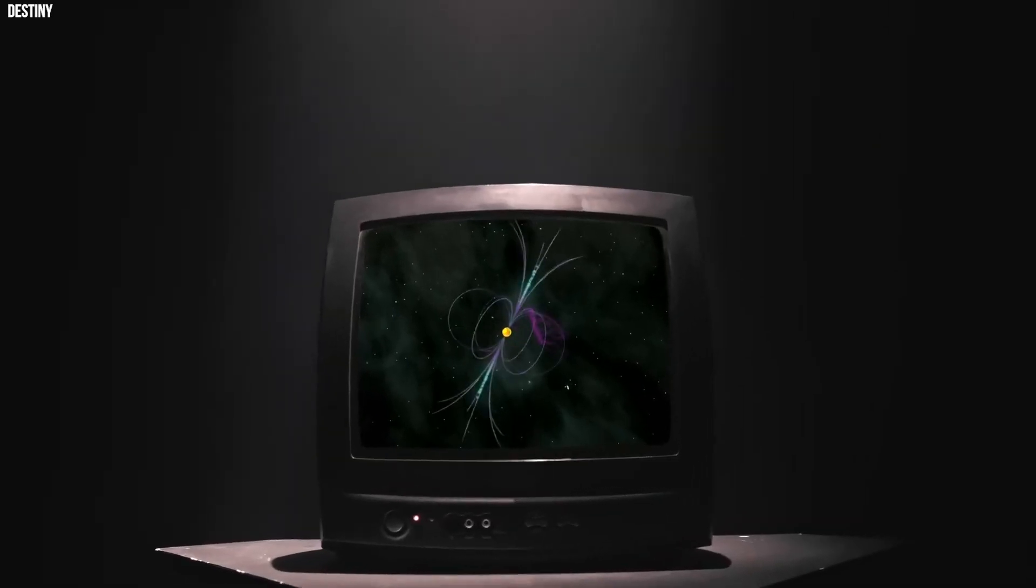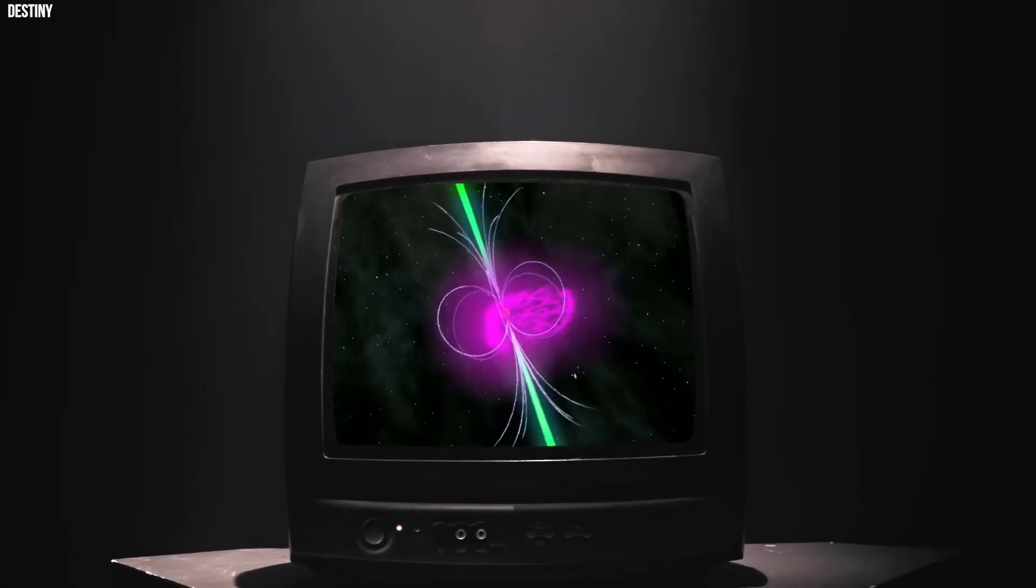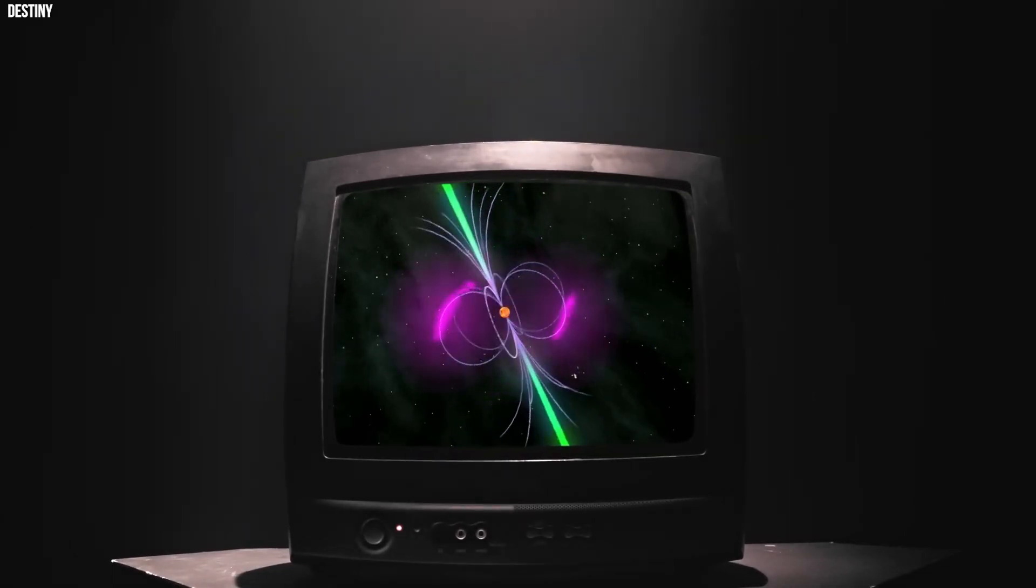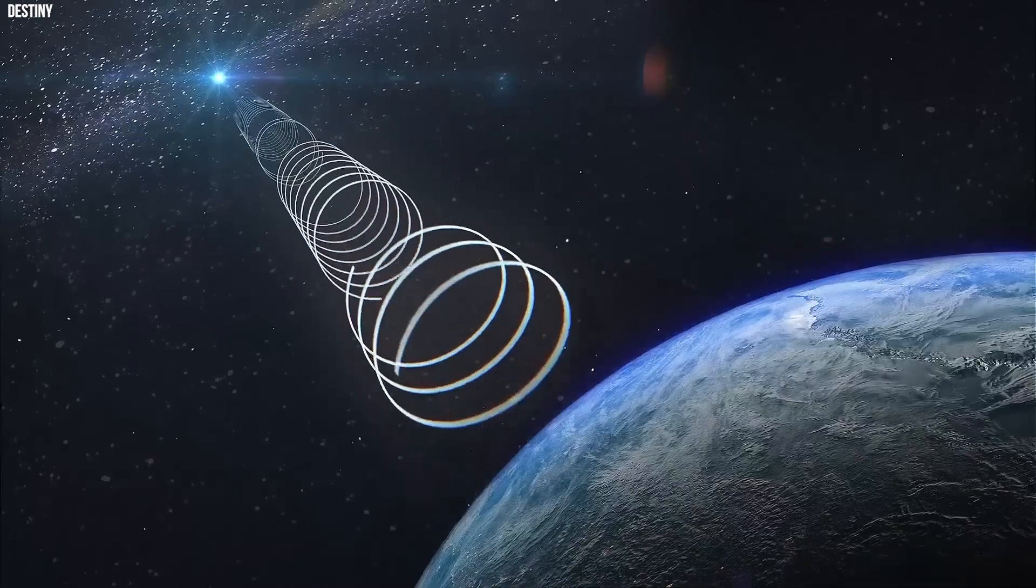As we've seen with terrestrial gravitational wave detectors like LIGO and VIRGO, detecting minute disturbances in space-time requires cutting-edge technology and careful calibration. Extraterrestrial communication using gravitational waves would necessitate a level of sensitivity and specificity beyond what we currently possess.